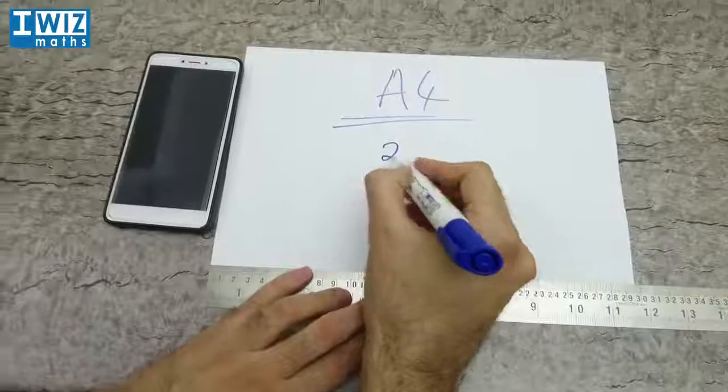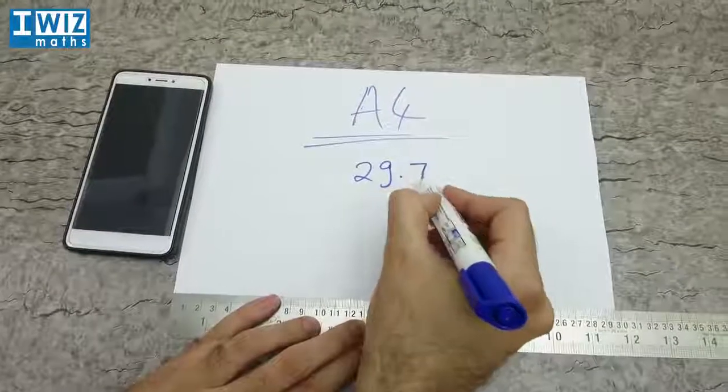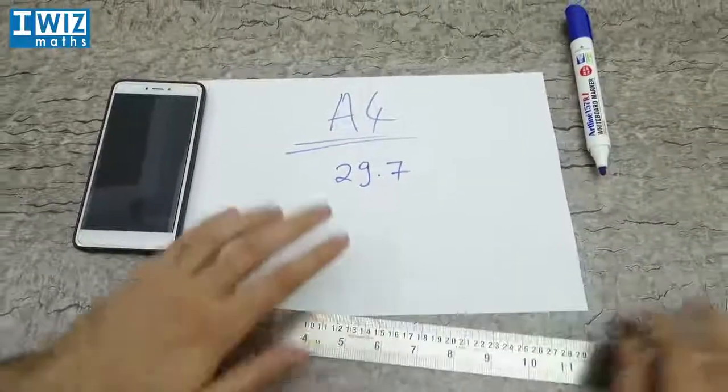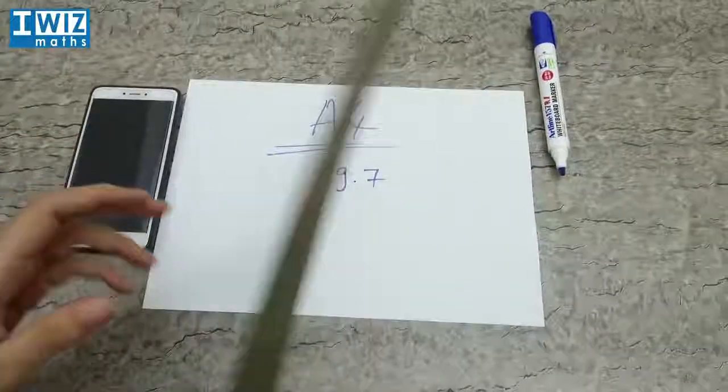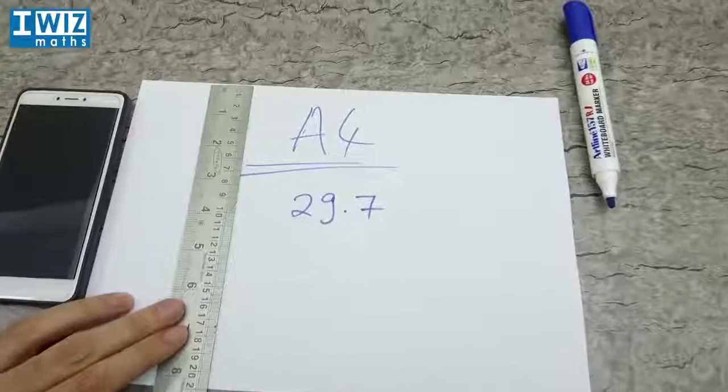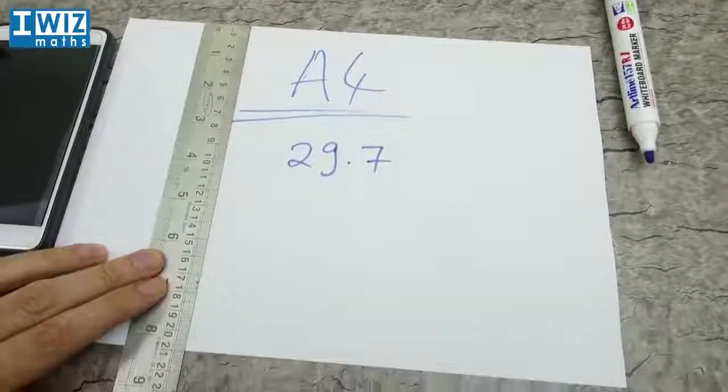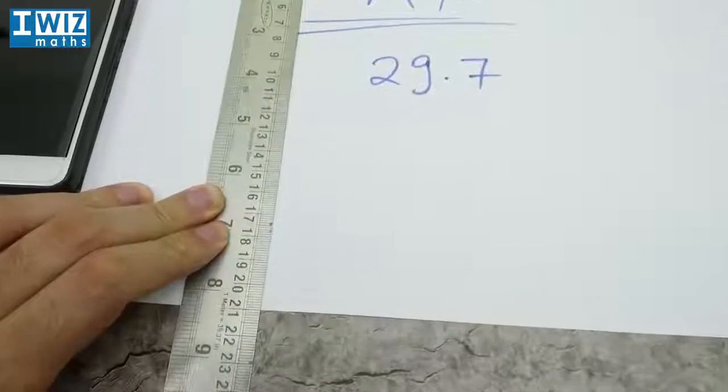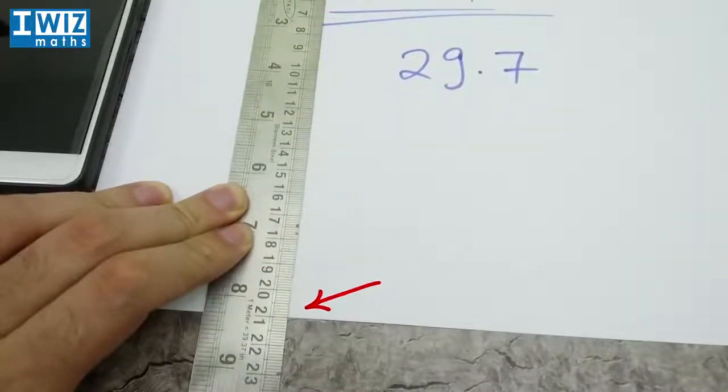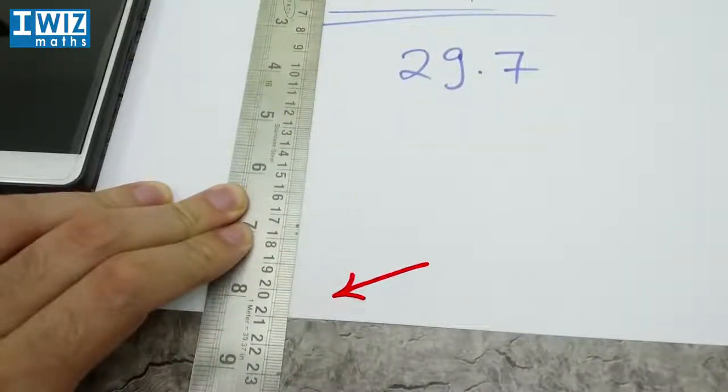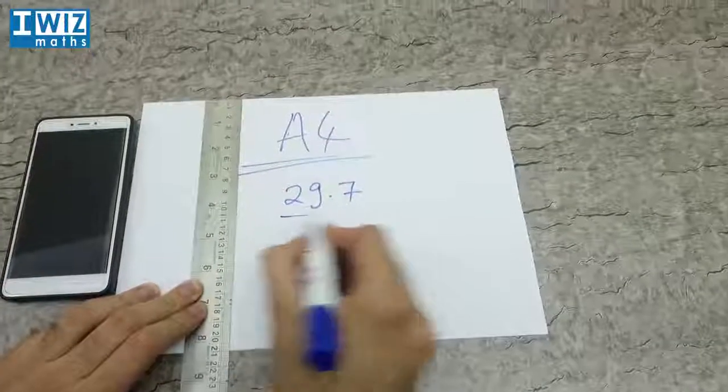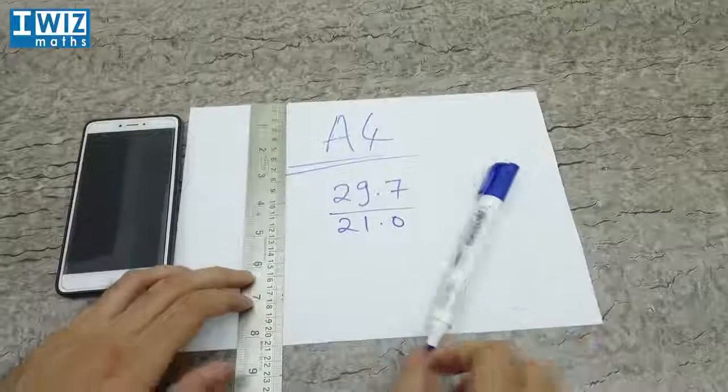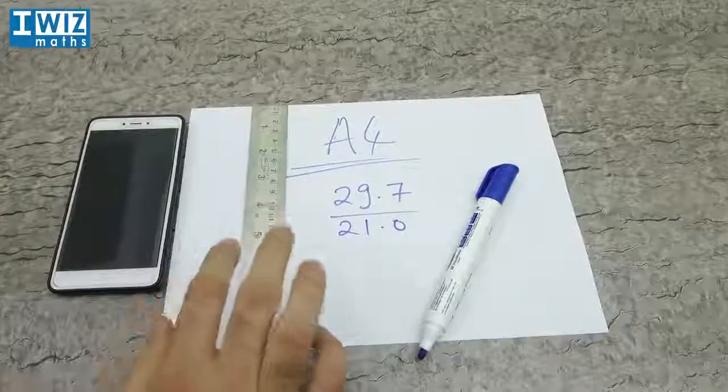Now let's measure the other side. If we measure the other side as carefully as we possibly can, it seems to be 21. I think that would be fairly accurate to say that's 21.0. Let's go ahead and calculate that ratio on our calculator.